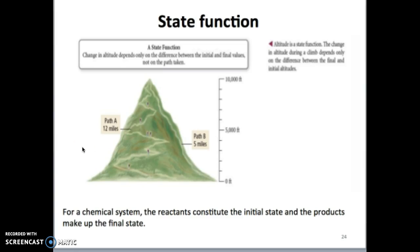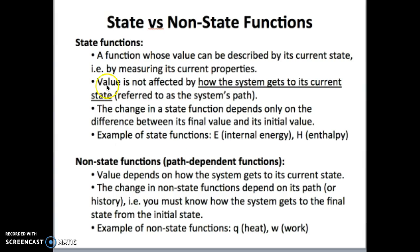So there are two different parameters we can measure. One parameter depends on the path we take to go from the initial to the final state. Another parameter does not depend on the path taken to get from the initial to the final state. In thermodynamics, we also have similar types of parameters — functions that will change when we take a different path, and functions whose values will not change. These are defined as state and non-state functions.